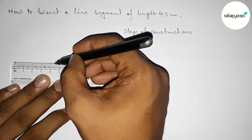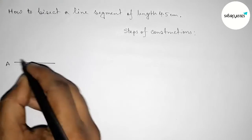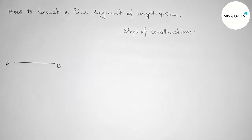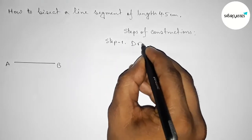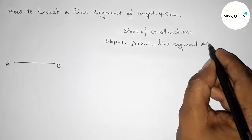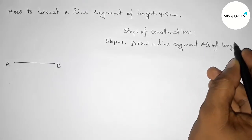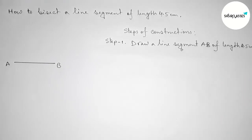Now taking here a point A and here B. So step number one: first we have to draw a line segment of length 4.5 centimeters.